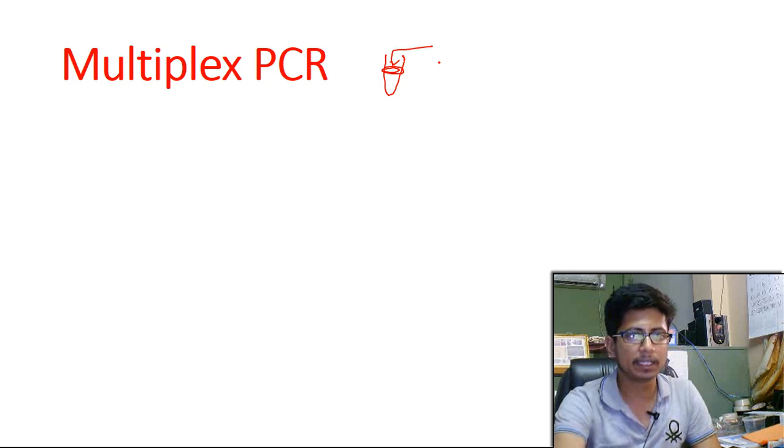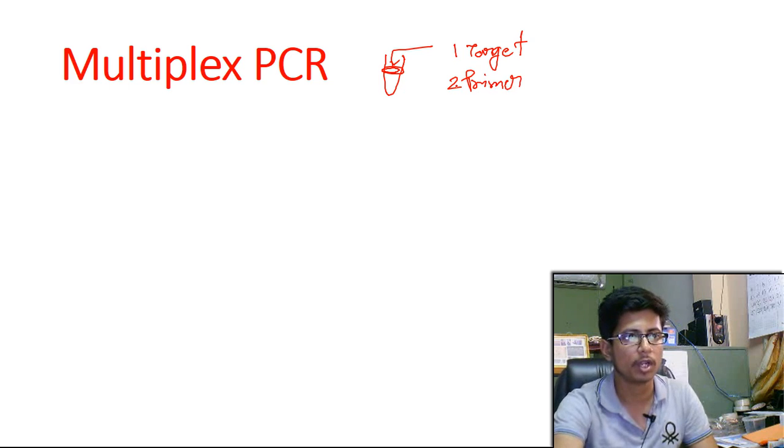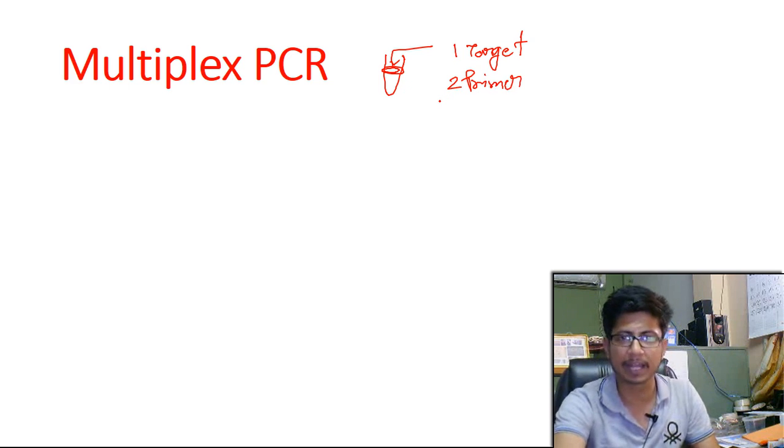Normally in single PCR reactions, we use one target DNA which we will amplify. We use two primers, one set of primers for the amplification process, and we use a polymerase, which is Taq polymerase.